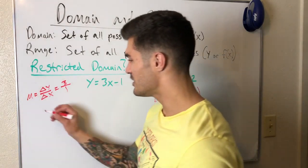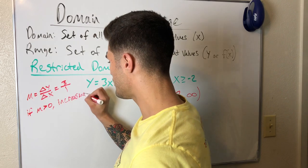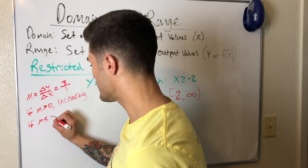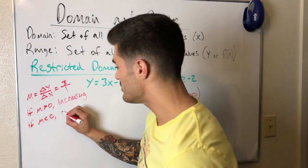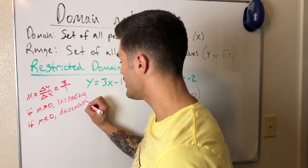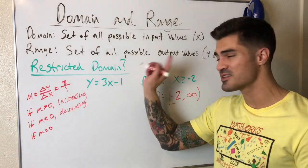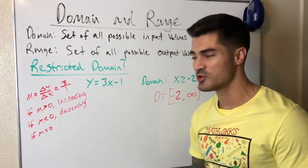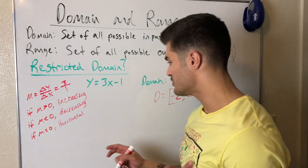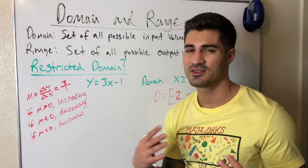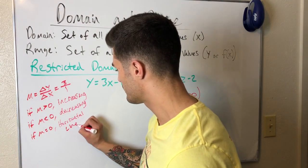This function is an increasing function. The general rule: if m is greater than zero, the function is increasing. If m is less than zero, m is negative, so as x increases y decreases — that's a decreasing function. If m equals zero, x disappears and we have y equals a constant, which is a horizontal line. The range of a horizontal line is just one number, so the domain restriction affects it very little.